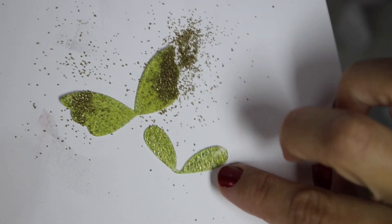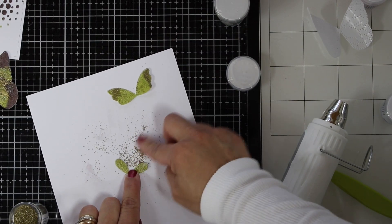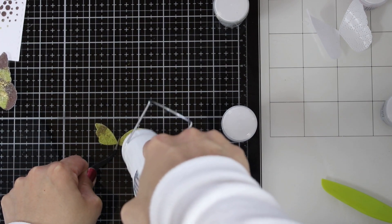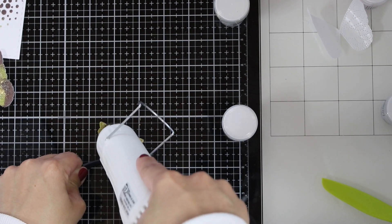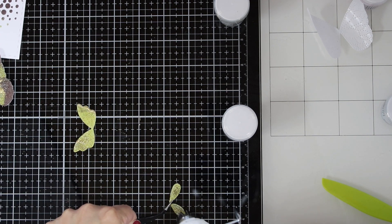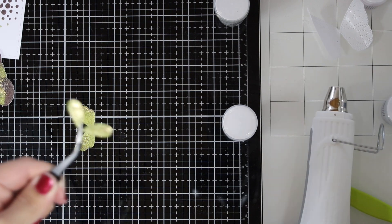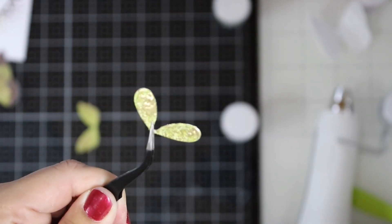Remember again that this is a very chunky embossing powder and it's just beautiful to add texture to your projects. Because it's so chunky, it's not great for stamped sentiments. For stamped sentiments, you need to use ultra fine embossing powder, the completely opposite to this chunky powder.